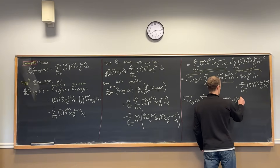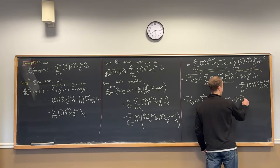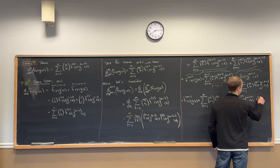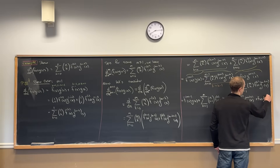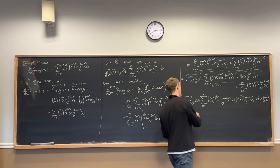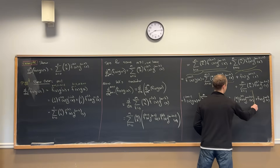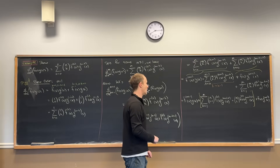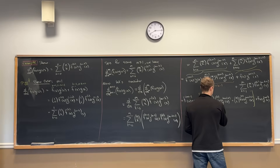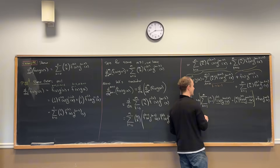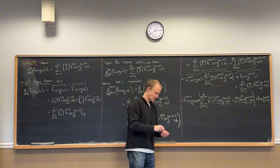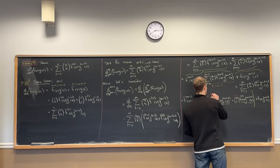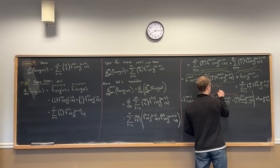Now check it out: that looks exactly like the second sum — m choose k, the kth derivative of f, the (m plus 1 minus k)th derivative of g — except with coefficient m choose (k minus 1) instead of m choose k. So the same product appears in both sums with different binomial coefficients. Let's look at those: we have m choose (k minus 1) plus m choose k.